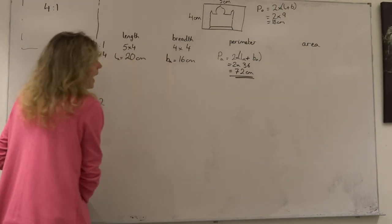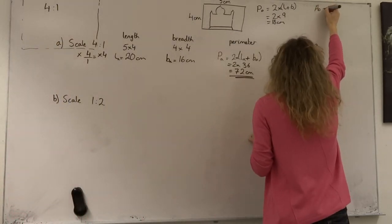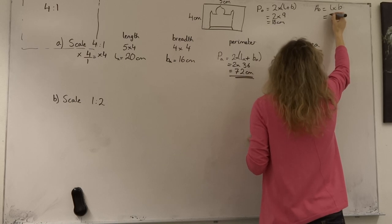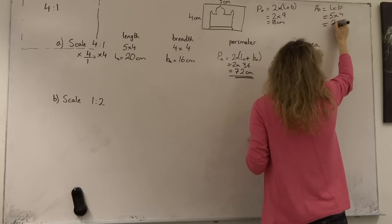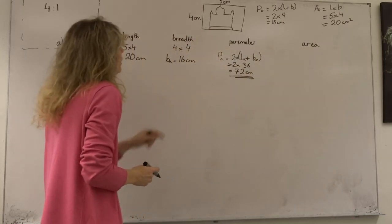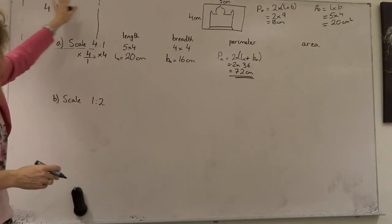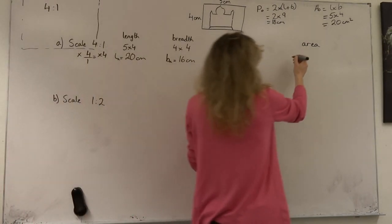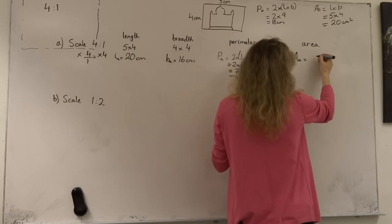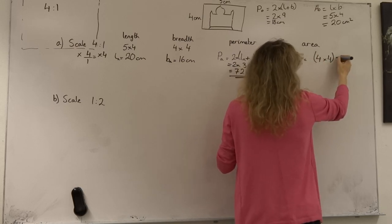Now let's look at the area. The area of the original would be length times breadth, which is 5 times 4, giving 20 centimetres squared. The area of our original photograph is 20 centimetres squared. The area of the enlargement would be the original length 4 multiplied by the enlargement factor 4, multiplied by the original breadth 5 times the enlargement factor.